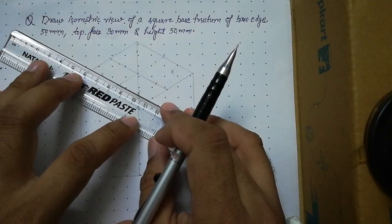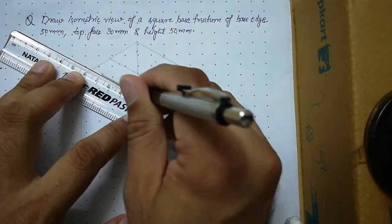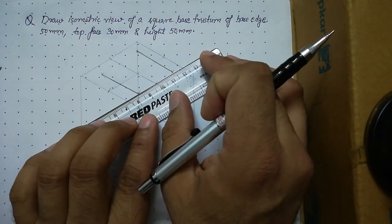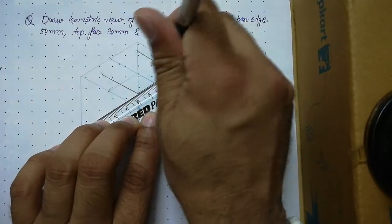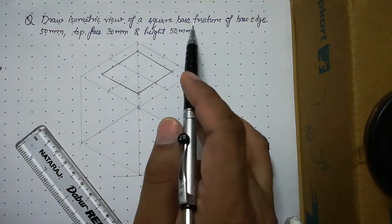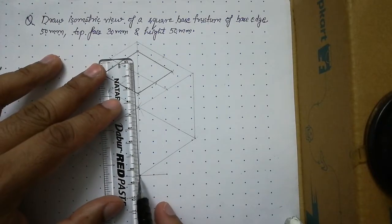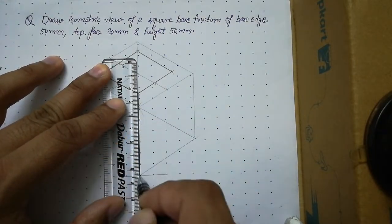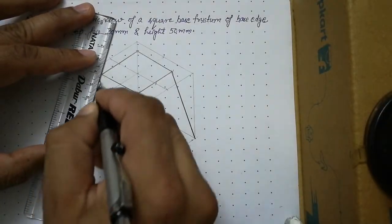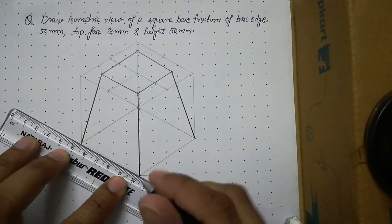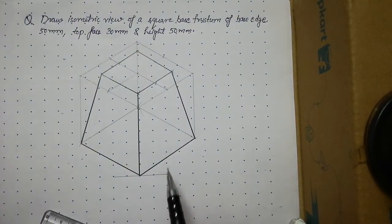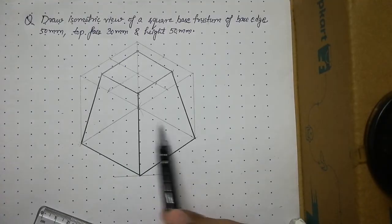Join the four generated corners with thick lines to form the top face of the square base frustum, since it is visible in this view. Then join each corner of the top face to the corresponding corner of the base to draw the lateral edges — the two front edges are drawn thick, while the two rear edges are kept thin as they are hidden behind the front faces.